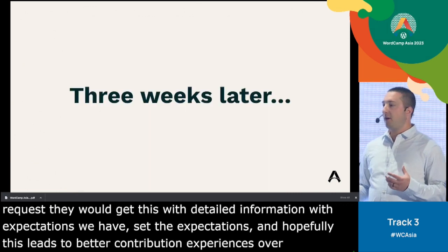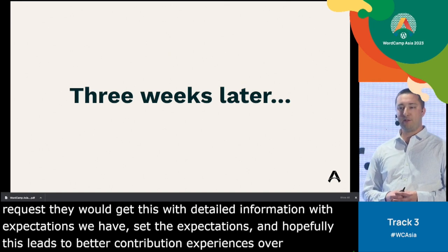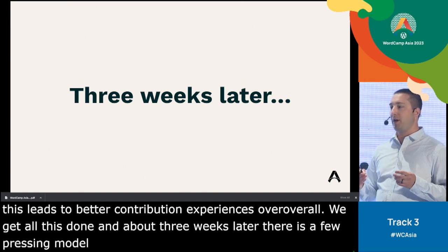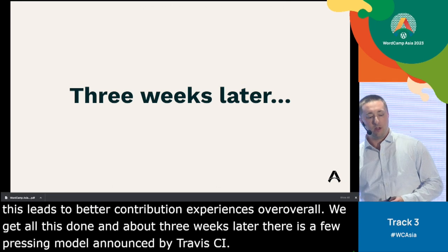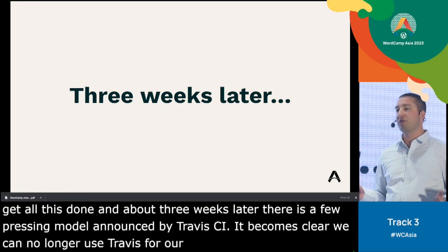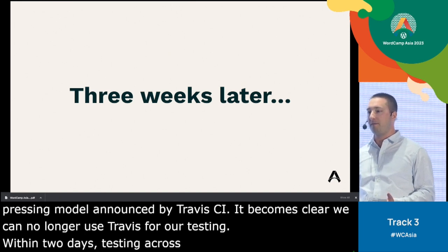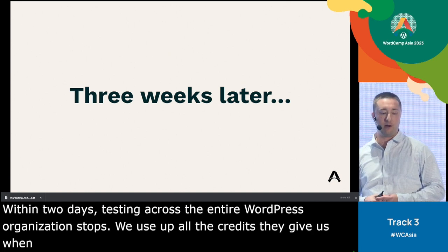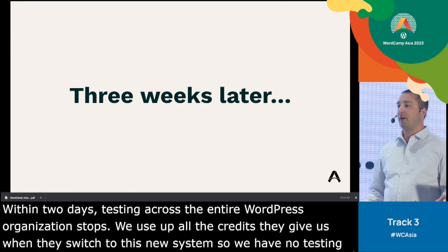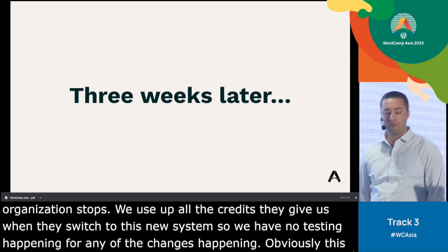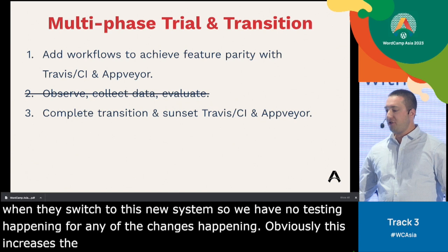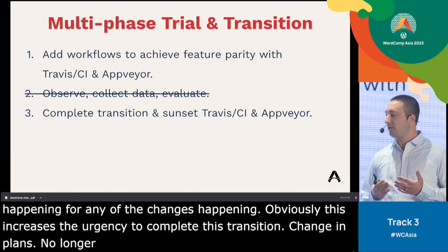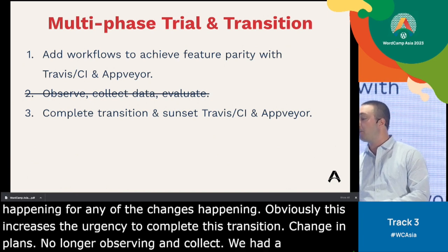About three weeks later, a new pricing model is announced by Travis CI, and it becomes clear very quickly that we can no longer use Travis for our testing. Within two days, testing across the entire WordPress organization stops — we use up all the credits they gave us when they switched to the new system, so we have no testing happening for any of the changes. This obviously increases the urgency to complete this transition. We're no longer going to observe and collect — it's working for us and we're going to complete the transition now.